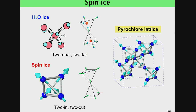In ordinary water ice, hydrogen atoms are bonded to two oxygens — strongly to one and weakly to the other — so a 'too near and too far' configuration is realized. Because of this ice rule, it gives rise to large ground-state degeneracy and large residual entropy.